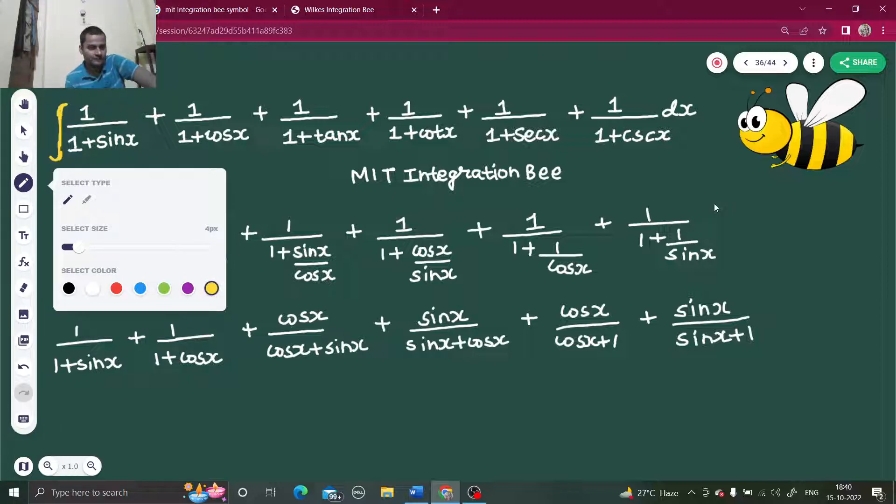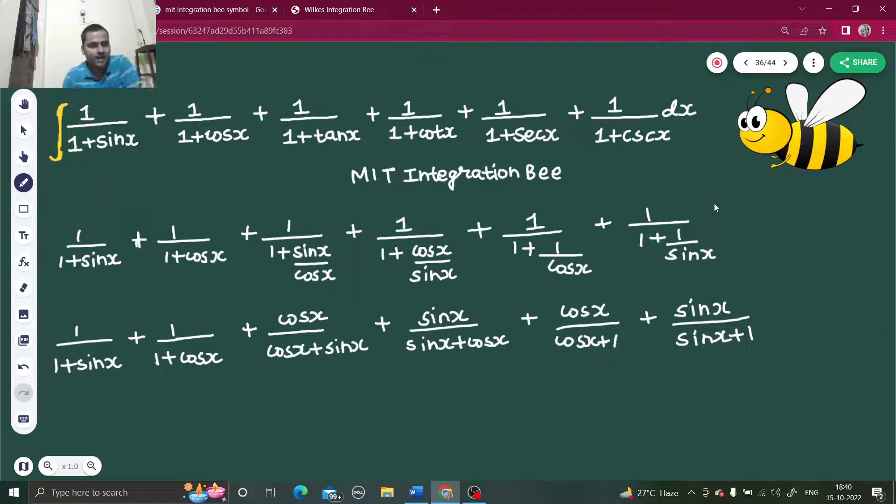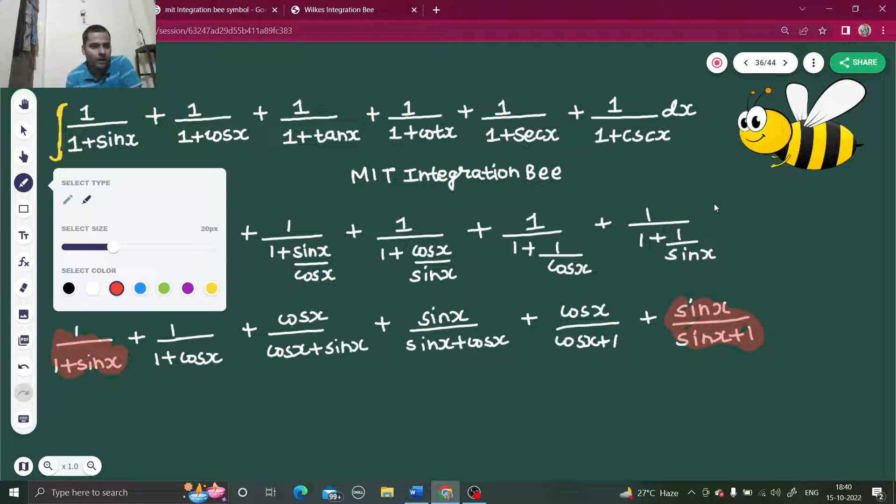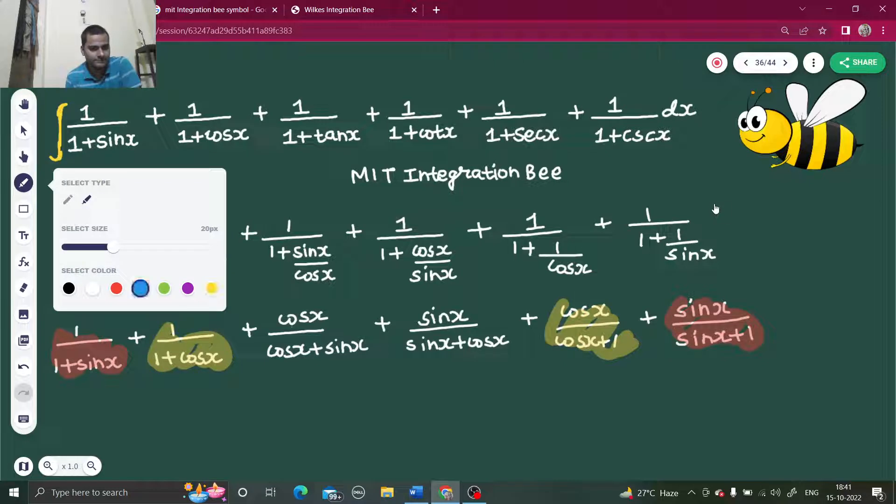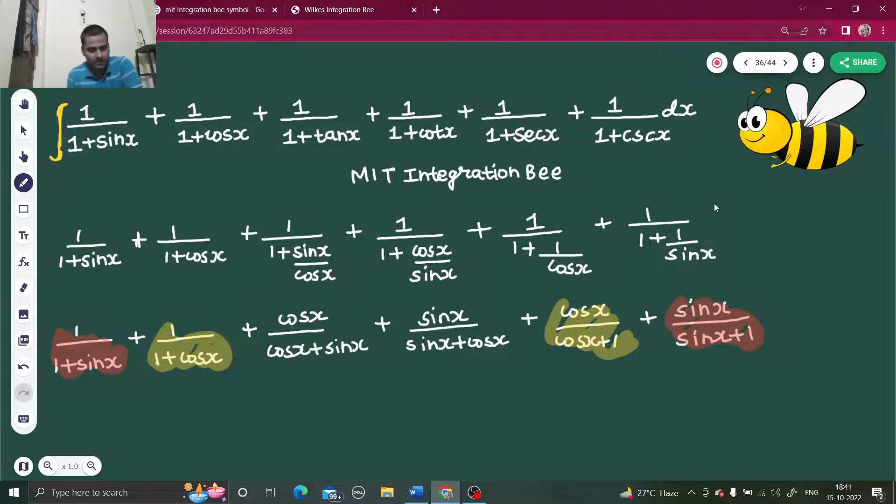If you look at this carefully, then 1 upon 1 plus sin x and 1 plus sin x, they can be clubbed together. Also, 1 upon 1 plus cos x and cos x divided by cos x plus 1 can be clubbed together. Further, cos x divided by cos x plus sin x and sin x divided by sin x plus cos x can be clubbed together.